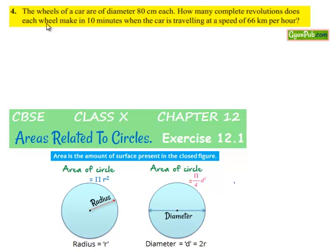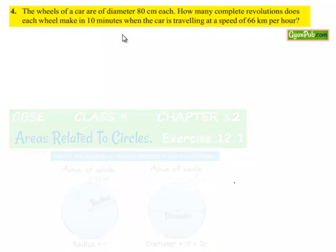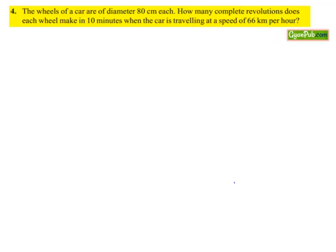Coming to the fourth question. The wheels of the car are of diameter 80 cm each. How many complete revolutions does each wheel make in 10 minutes when the car is travelling at the speed of 66 km per hour?